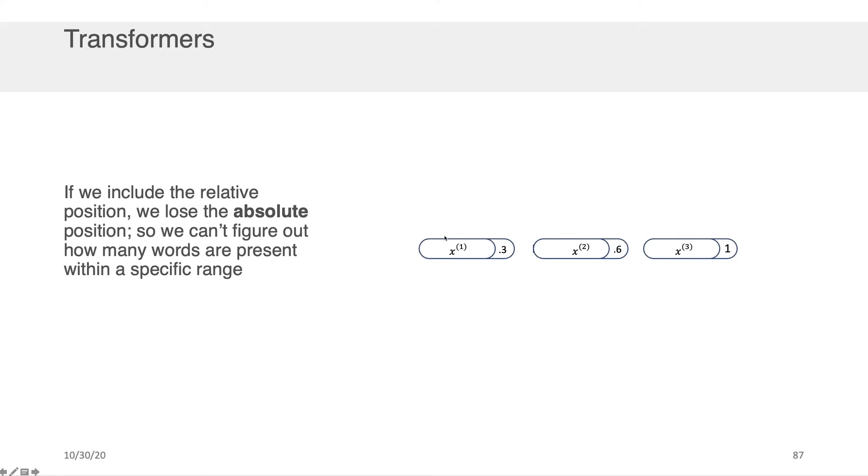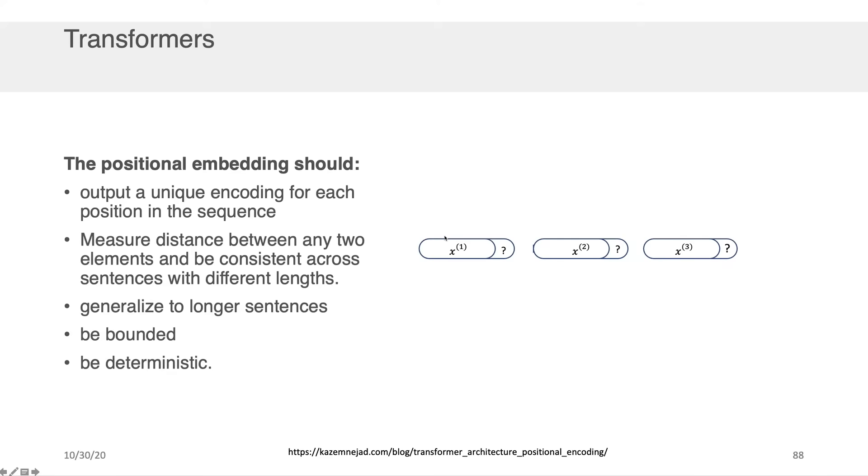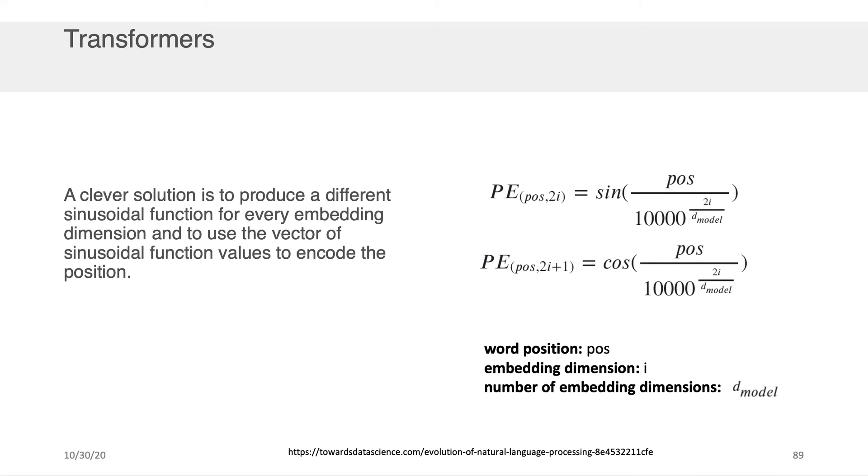So ideally what we'd like is for these positional embeddings to output a unique encoding for each position in the sequence. We want to be able to measure distance between any two elements and to be consistent across the sentences with different lengths so we should be able to generalize to normal sentences for example. And we also need the output to be bounded in a particular range and to be deterministic so that if we generate it twice, it will generate the same kinds of outcomes. Okay, well one clever solution to this problem is to produce a different sinusoidal function for every embedding dimension and to use the vector of sinusoidal function values to encode the position.